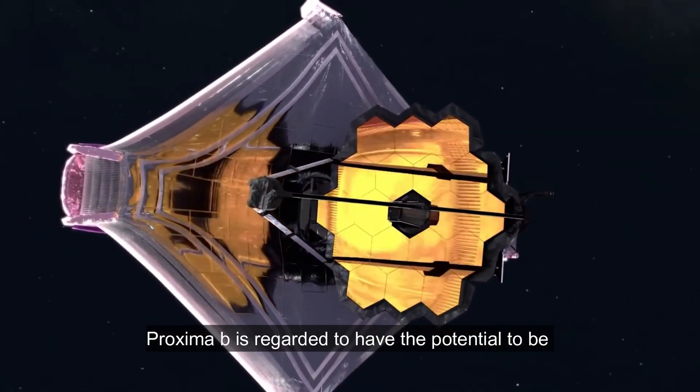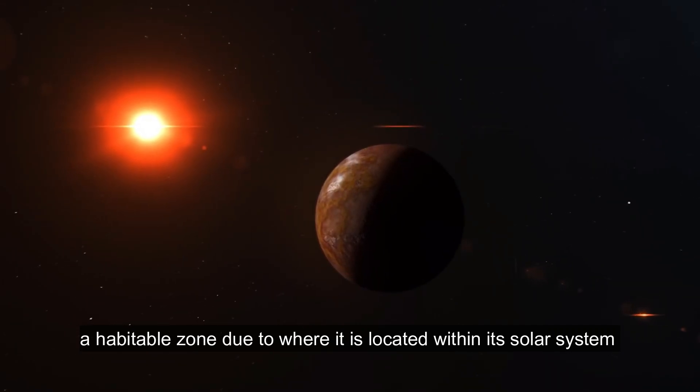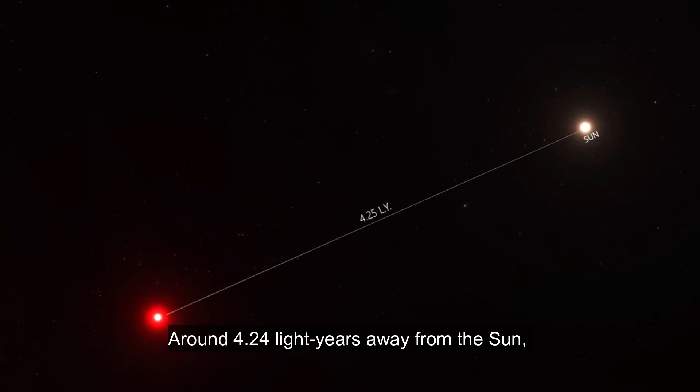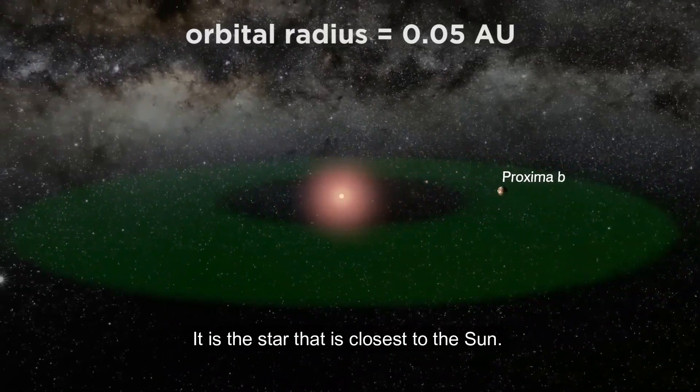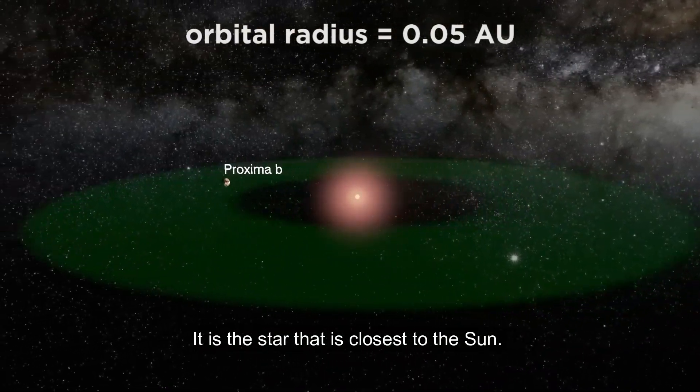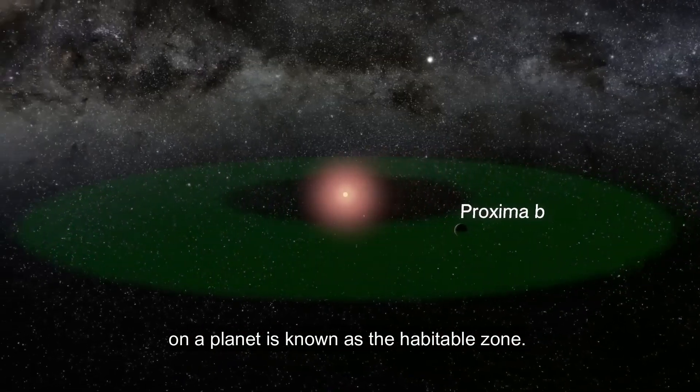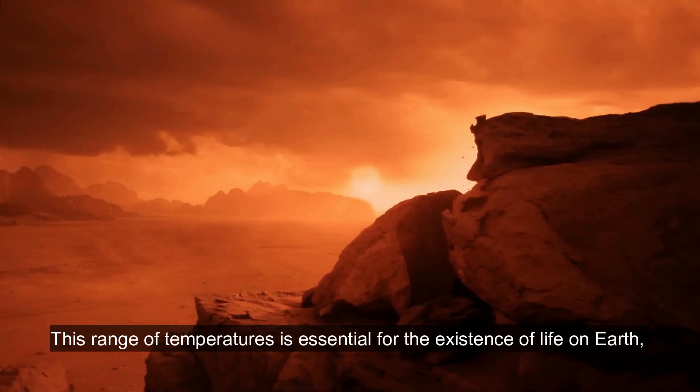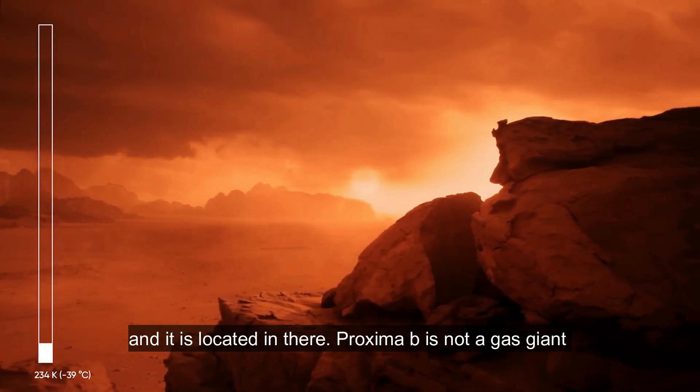Proxima B is regarded to have the potential to be in a habitable zone, due to where it is located within its solar system and the characteristics of the planet itself. Around 4.24 light-years away from the Sun, the red dwarf star Proxima Centauri is located in the habitable zone. It is the star that is closest to the Sun. The range of temperatures at which liquid water can exist on a planet is known as the habitable zone. This range of temperatures is essential for the existence of life on Earth, and it is located in there.